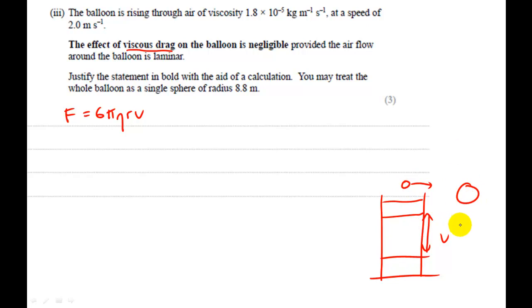the balloon rising up through the fluid of the air is basically just the same as a metal ball bearing falling through some engine oil for instance. So it just wants you to show that the force will be negligible, the viscous drag which is the resisting force will be very very small is what it wants you to show. So you can simply just take the numbers and substitute them straight into this formula. It will be 6 pi, the viscosity is 1.8 times 10 to the minus 5 multiplied by the radius of a sphere which is the radius of the balloon 8.8 multiplied by the velocity 2 meters per second.